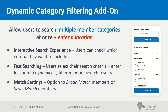If a user selects multiple member categories — say they're searching for auto repair shops and they select the brake inspection category and the dent repair category — then with the broad match setting, they'll be presented with members listed in any of the categories they selected, so they'll see members who do brake inspections or dent repair. With the strict match setting, they'll only see members who match exactly the criteria selected — so members who do both brake inspection and dent repair.